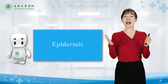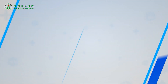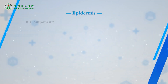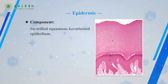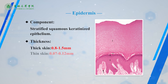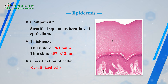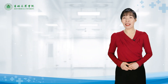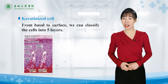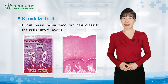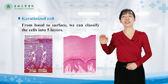Let's study the epidermis. The component of epidermis is keratinized stratified squamous epithelium, which includes two types of cells: keratinized cells and non-keratinized cells. In thick skin, keratinized cells are classified into five layers from the basal to the surface.